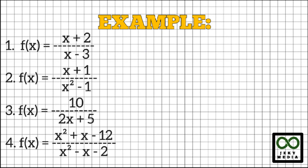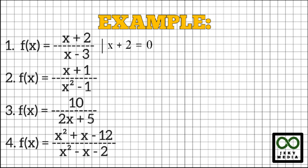Let's try to find the zeros of the following rational functions. Number 1: f(x) equals (x + 2) over (x − 3). Since the rational function is in its simplified form, let's focus on the numerator — x + 2 — and equate it to zero. x + 2 = 0. To get the value of x, transpose 2 to the right and change its sign. This gives x equals negative 2. The zero of this rational function is negative 2.